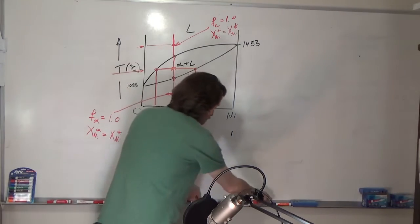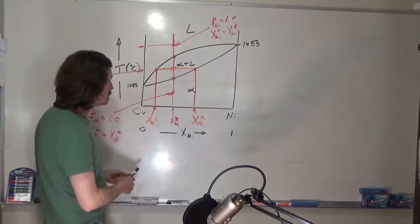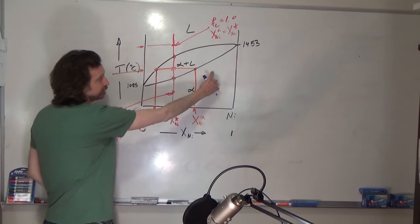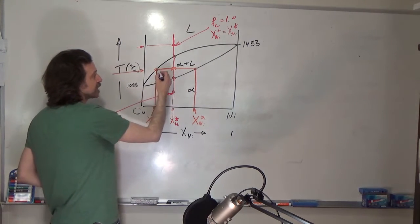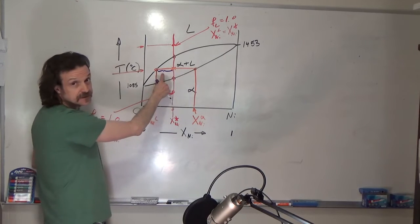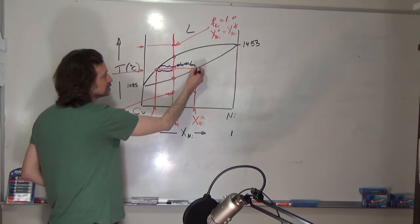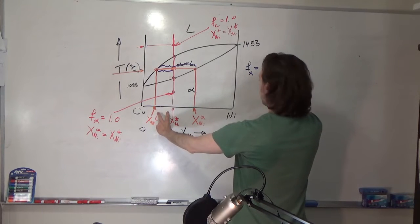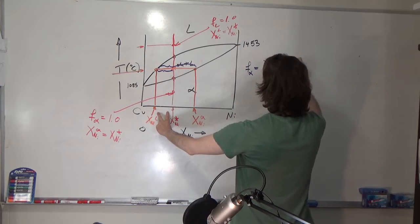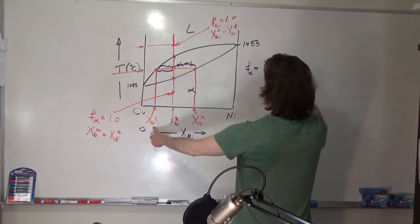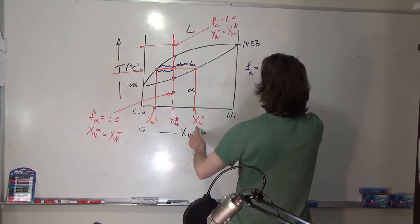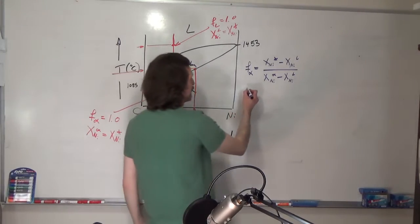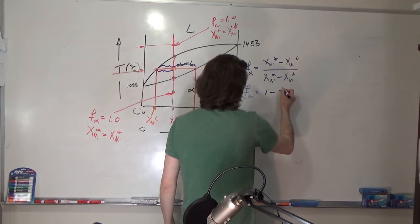Now we've identified those compositions, we can identify the phase fraction using the inverse lever rule. The fraction of alpha is the distance away from alpha divided by the total length: F_alpha equals (x_Ni star minus x_Ni^L) divided by (x_Ni^alpha minus x_Ni^L). And by deduction, F_L equals 1 minus F_alpha.